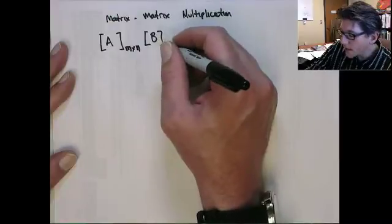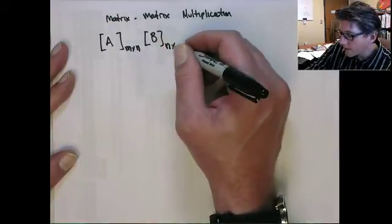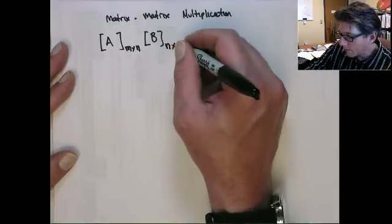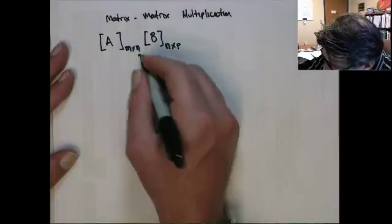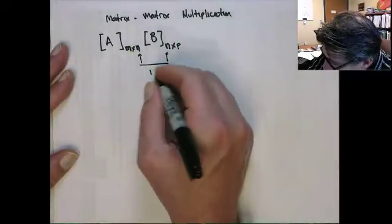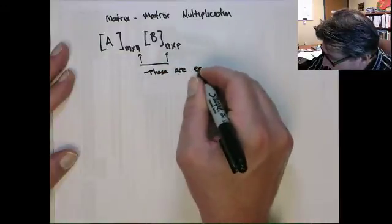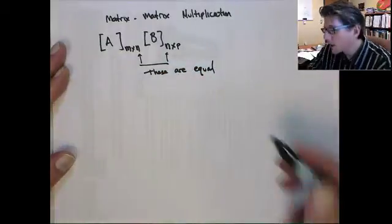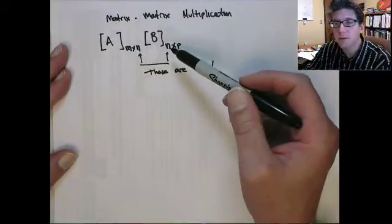So B needs to be an N by... Let's call it a P for now, okay? So it's absolutely essential that... These are equal. Okay?